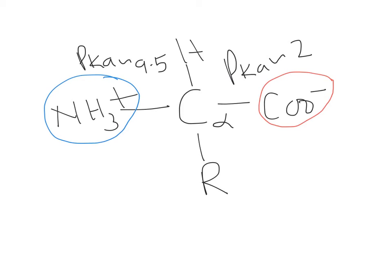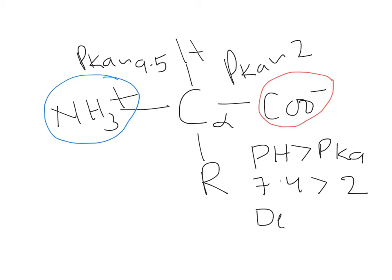To understand why the carboxylate group undergoes deprotonation and the amino group undergoes protonation, you need to know the relation between pH and pKa. I have made a separate video on this — there is a link above you can click to watch. Simply put, when blood pH is 7.4 and the pKa of the carboxylate group is 2, pH is more than pKa, so there will be deprotonation.